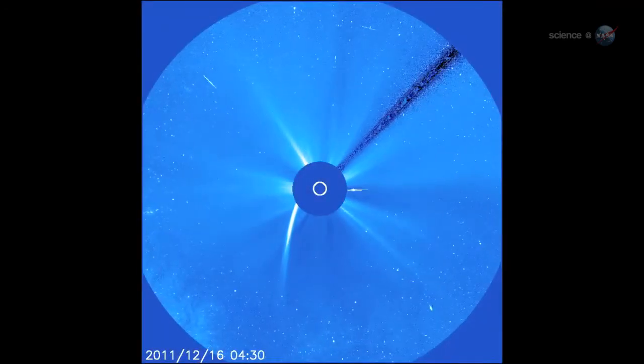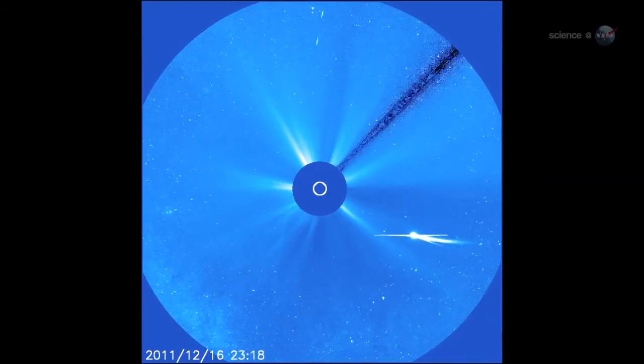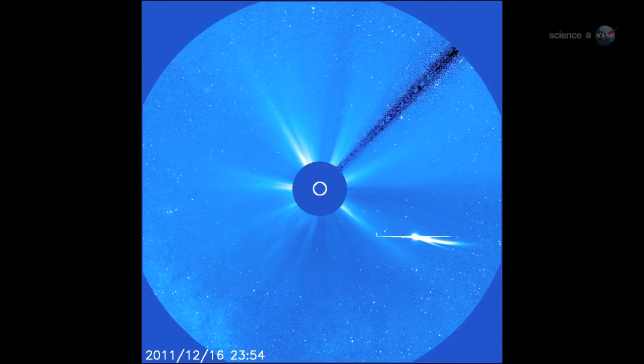What caused Lovejoy to lose its tail inside the Sun's atmosphere, and then regain it later? This is one of the biggest mysteries to me, says Battams.